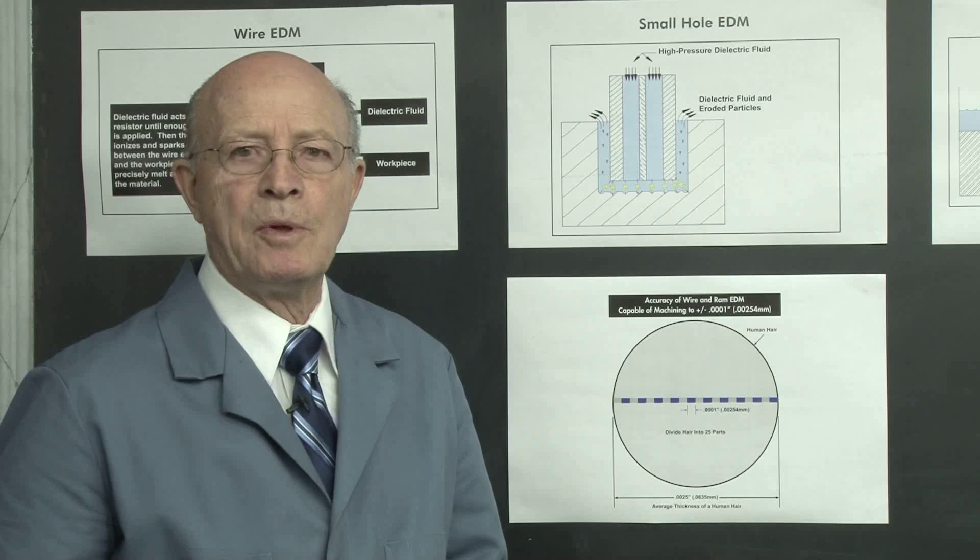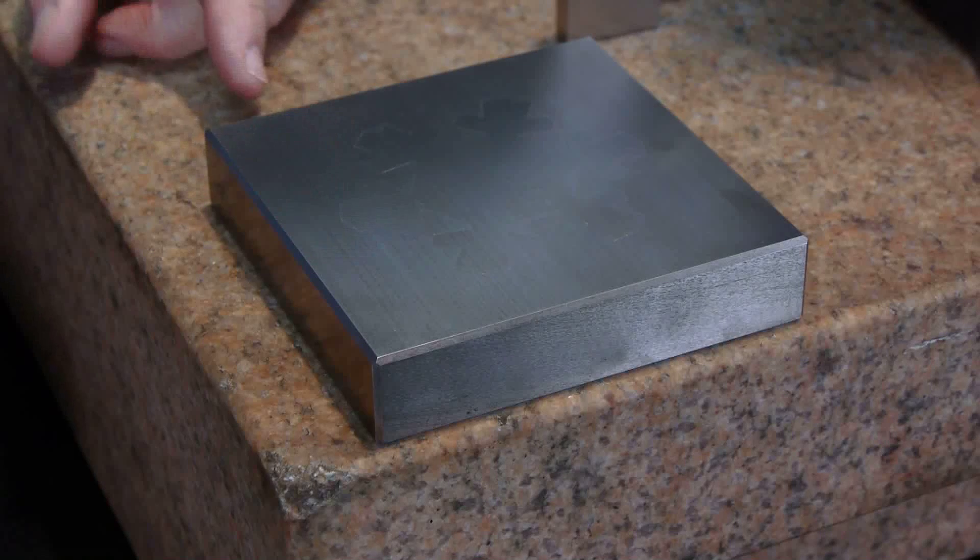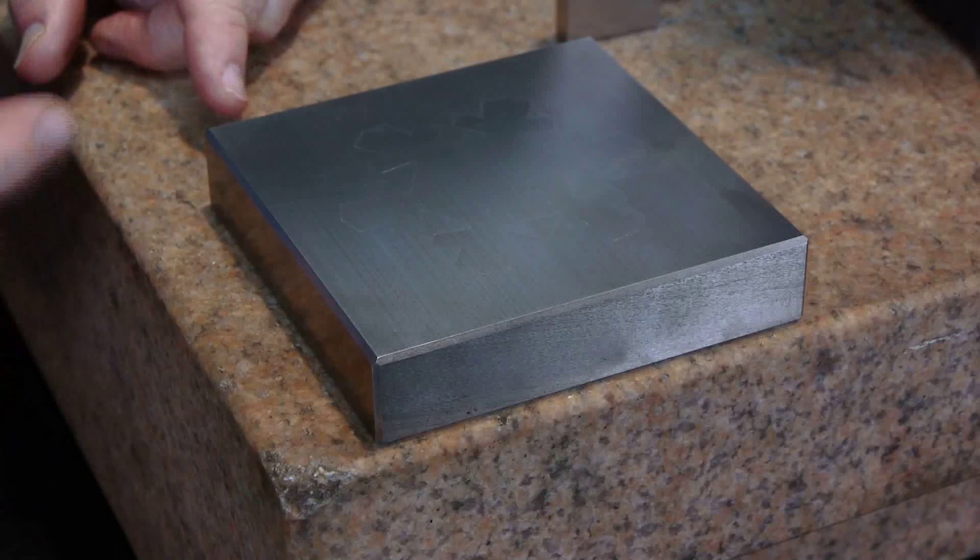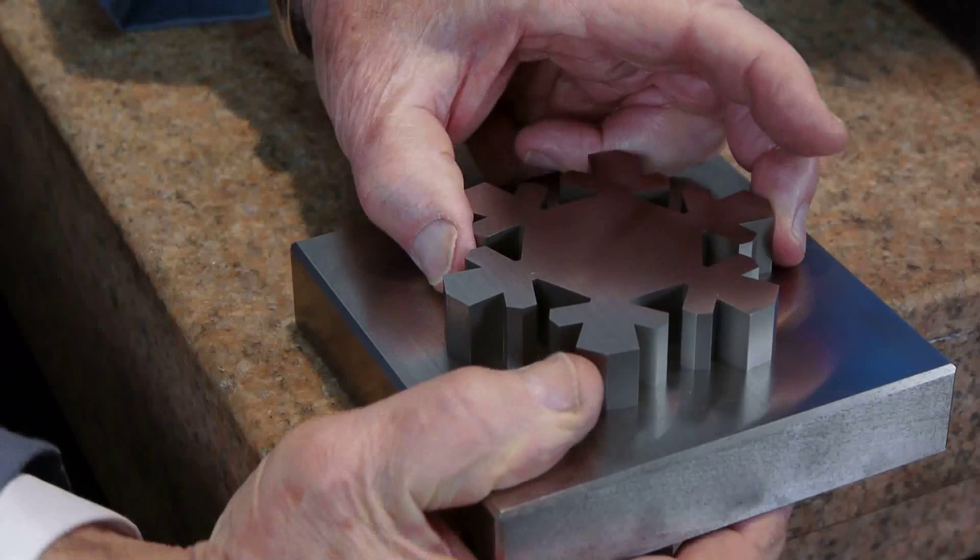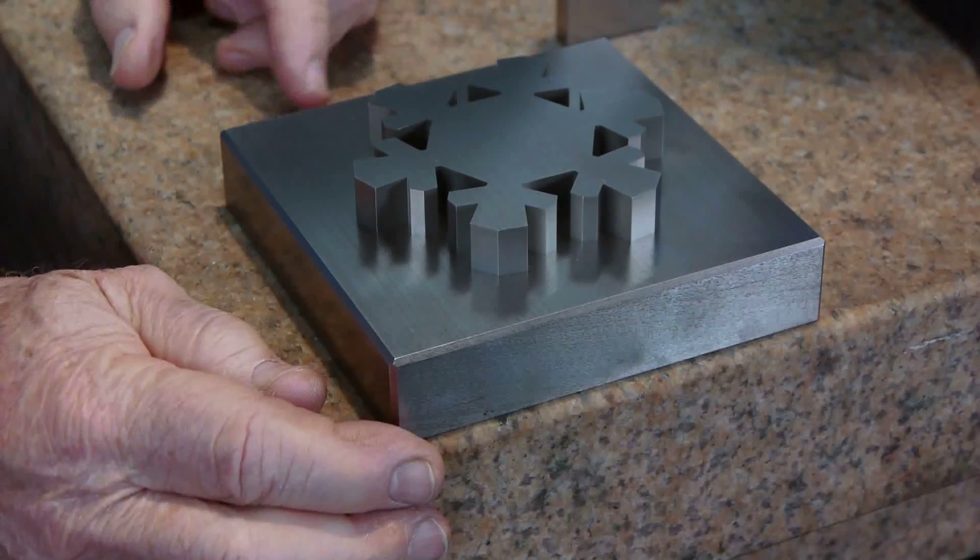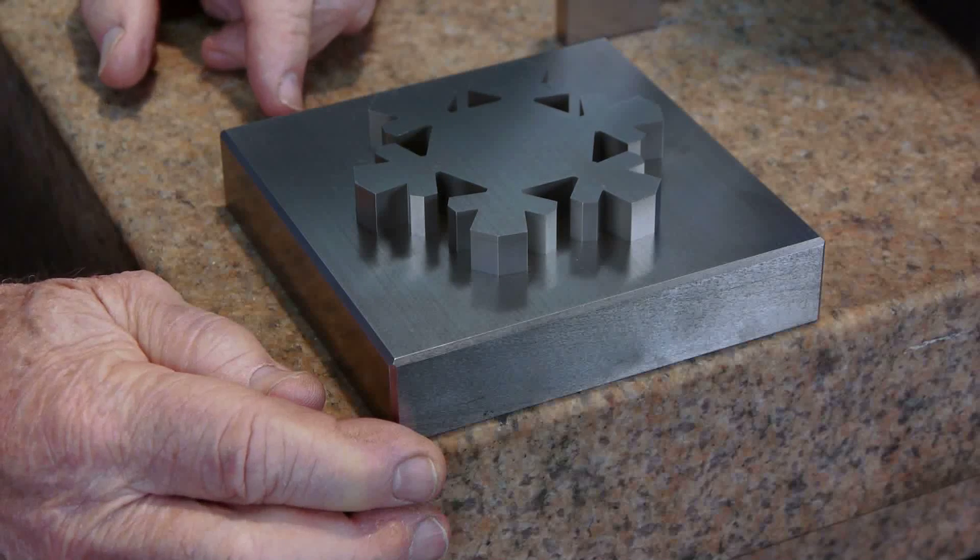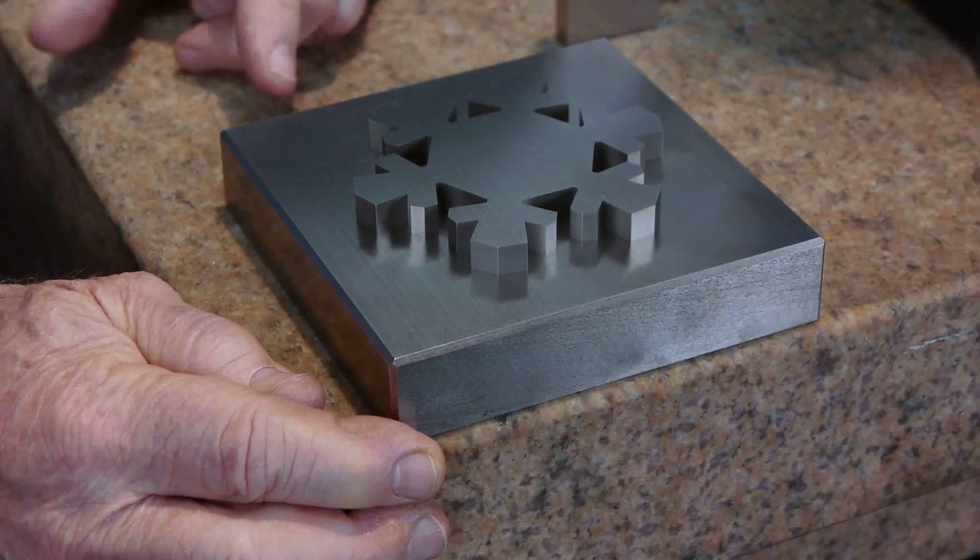Here's an example of the accuracy of wire EDM. This is a snowflake that we EDM'd, and it's made out of two pieces of tool steel. But I'm going to push it over to the edge, and push it out. This gives you a little bit of an idea of the accuracy that we can do with wire EDM.